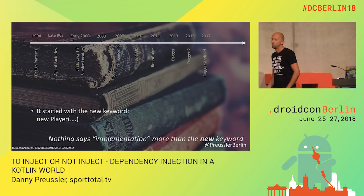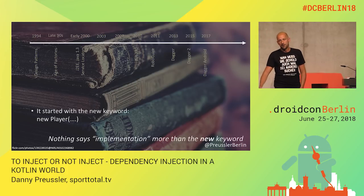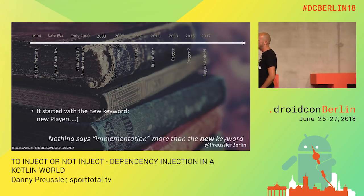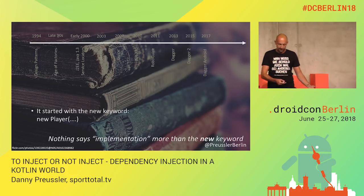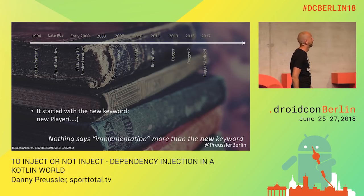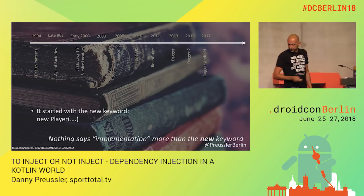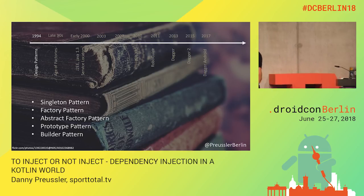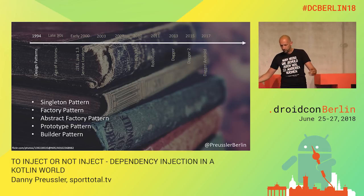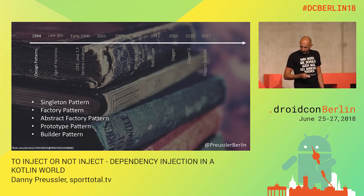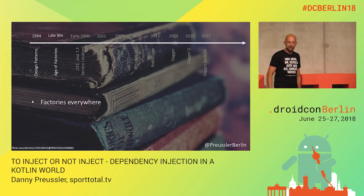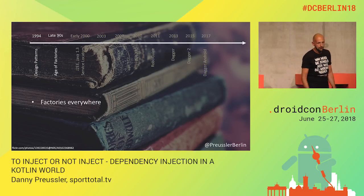Nothing says implementation more than a 'new' keyword. Very early we realized that's not a good idea — it's not testable, you should do more than just creating instances, and you should do only one thing. In 1994, the Gang of Four design patterns book came out with a lot of ways to replace or hide the 'new' — like factories. By the end of the 90s, factories were the thing, all over the place.